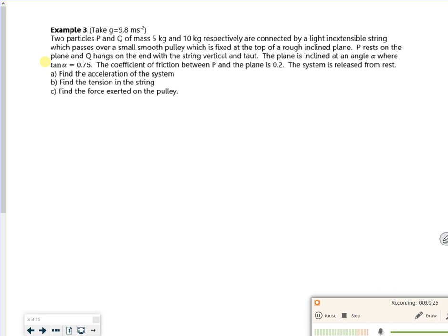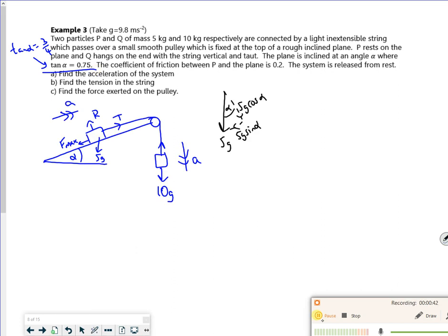So remember that idea: tan alpha is 3 over 4. I can make a triangle for it. I'm just going to pause and draw it because just in case there isn't that much time.